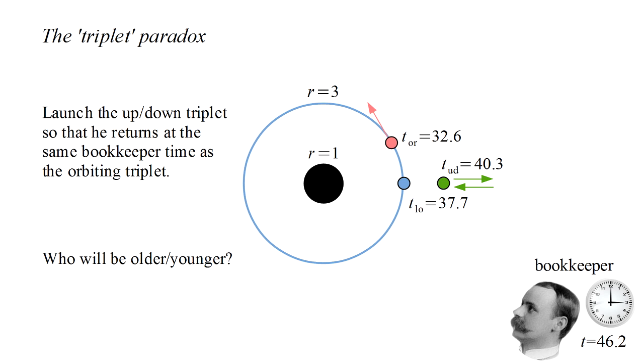The local and up-down triplet results are consistent with this. The local observer was not in free-fall. She felt her own weight, while the up-down triplet was in free-fall. As expected, his clock reading was more than hers. But what about the orbiting triplet? He also fell freely between the two events. Yet his clock reading was the smallest of all.